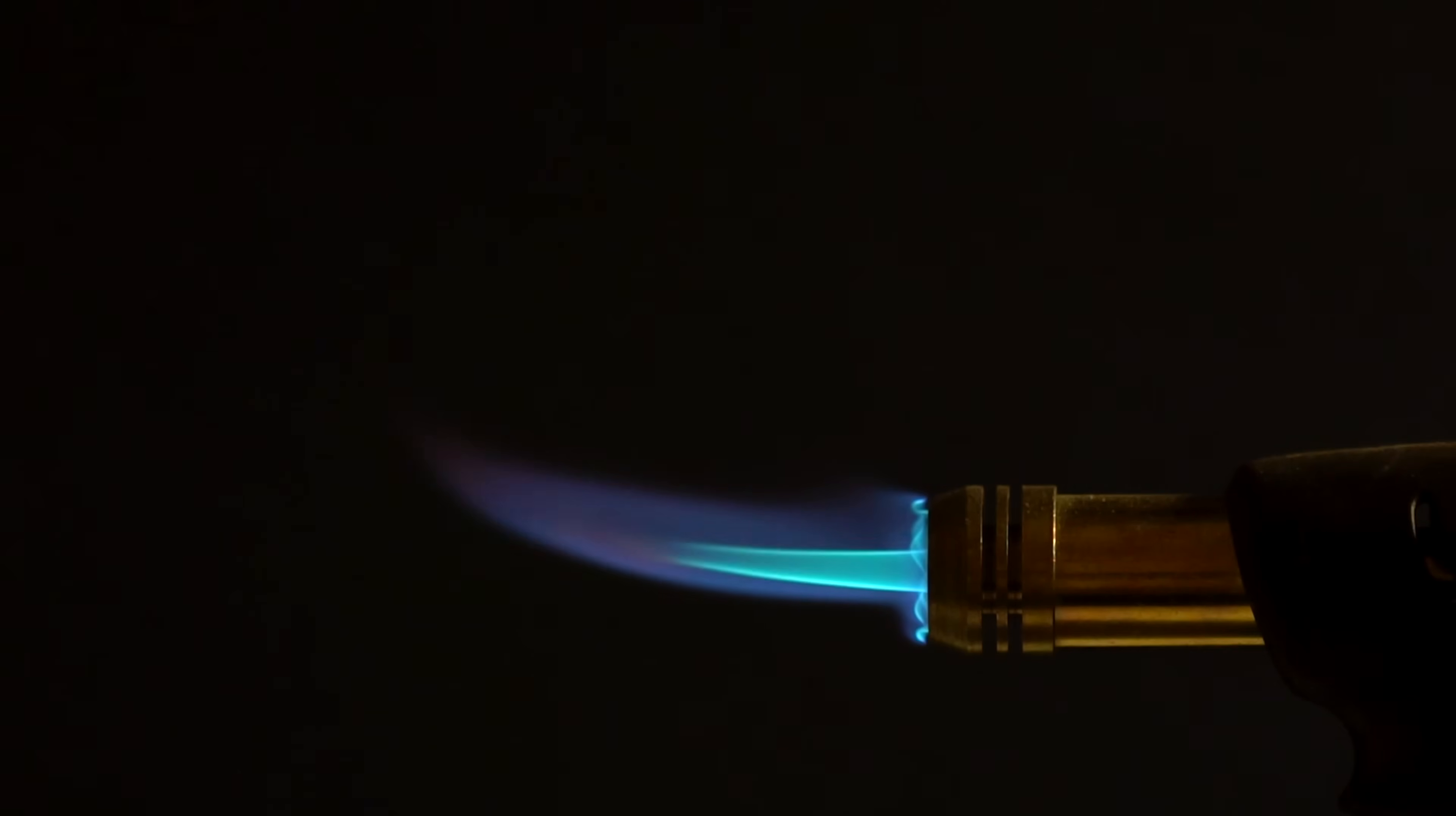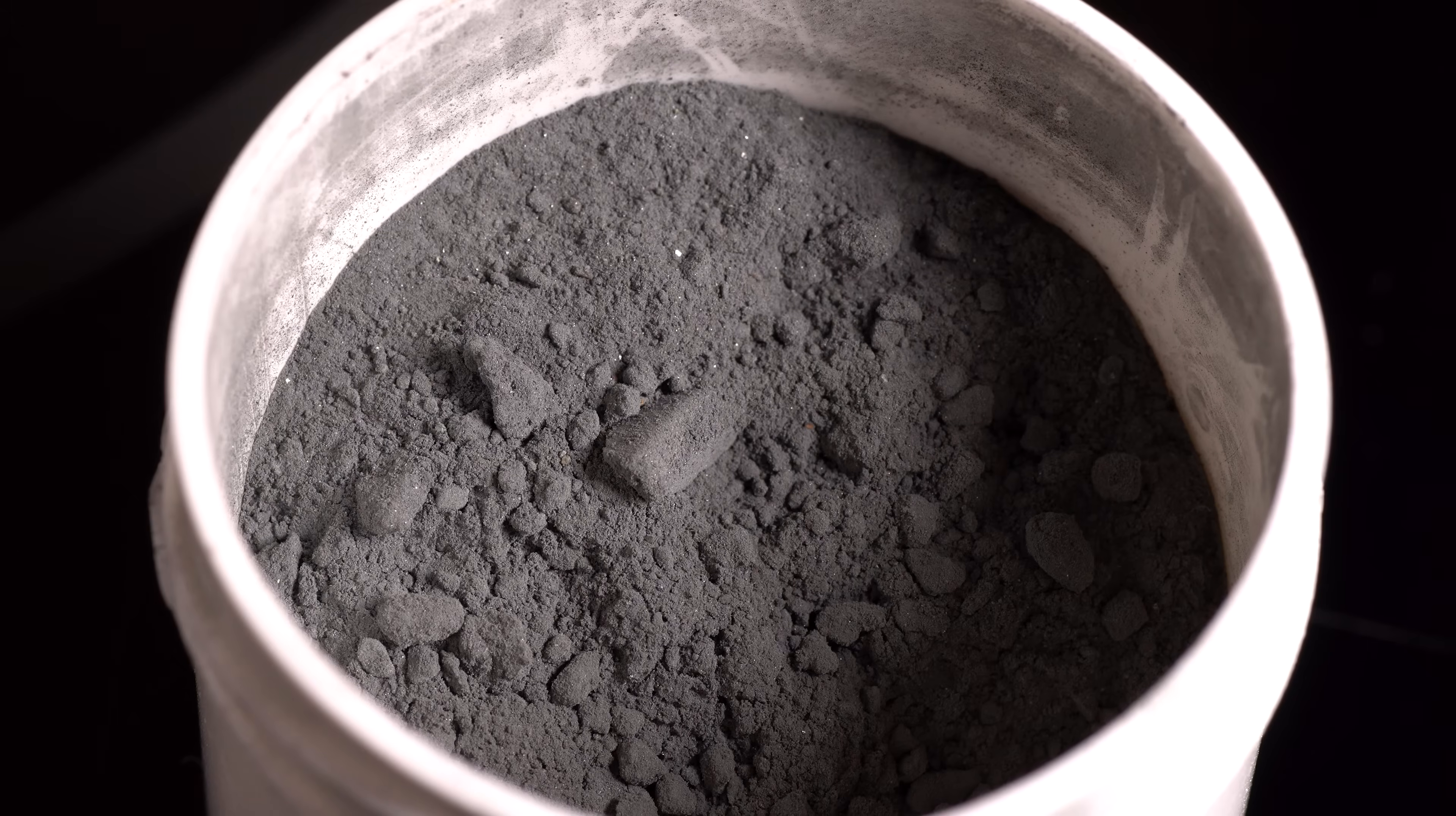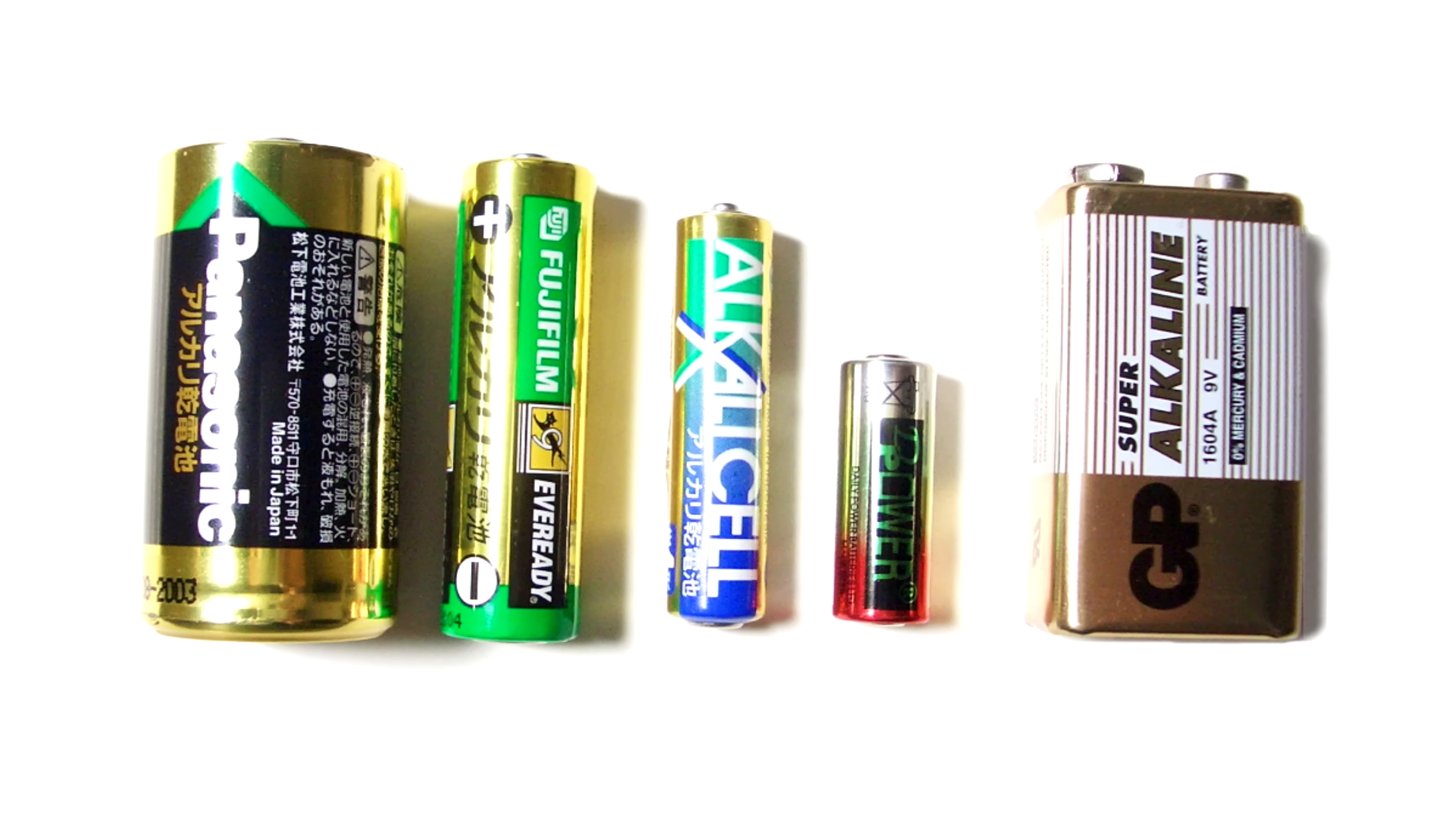If zinc powder is set on fire, it will burn well with the same blue and green flames forming zinc oxide. Thanks to the fact that zinc powder loses electrons well, that is oxidizes, it is used as anode in zinc manganese dioxide batteries that nowadays are among the cheapest and the most widespread ones.